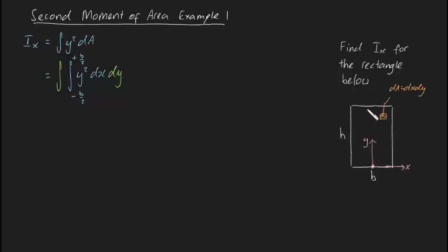The way you evaluate the double integral is to analyze the inner integral first, treating y as constant because we're only integrating with respect to dx. Then we analyze the outer integral. This equals the integral from 0 to h.